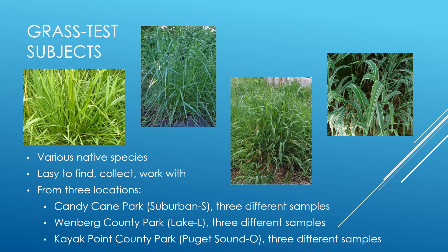In order to not overcomplicate the project, I chose to use grasses as my experimental subjects. I made this decision because the experiment was conducted during winter, so grass was one of the few land plants growing at the time. There are many species of grass native to Washington. I collected three samples from different areas of three different parks — one in the suburbs, one by a lake, and one along the Puget Sound — for a total of nine samples, in order to increase my chances of collecting different species.